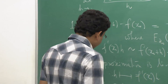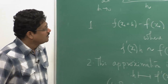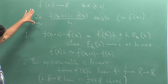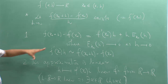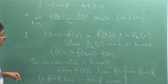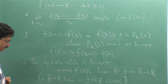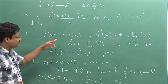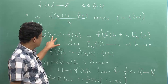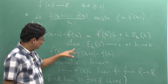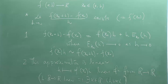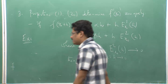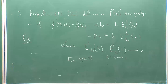Let us continue with the fifth lecture. As you have seen, these two properties for a function of one variable completely determine, as written on the other board, the derivative f prime at x naught — that it approximates the increment f(x naught + h) minus f(x naught) linearly. This leads us to the definition of differentiability of a function of several variables, and that is the correct definition.